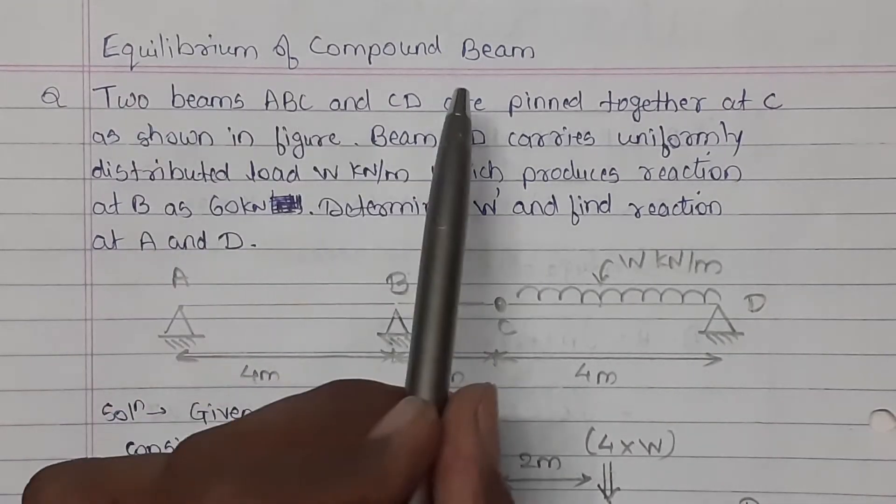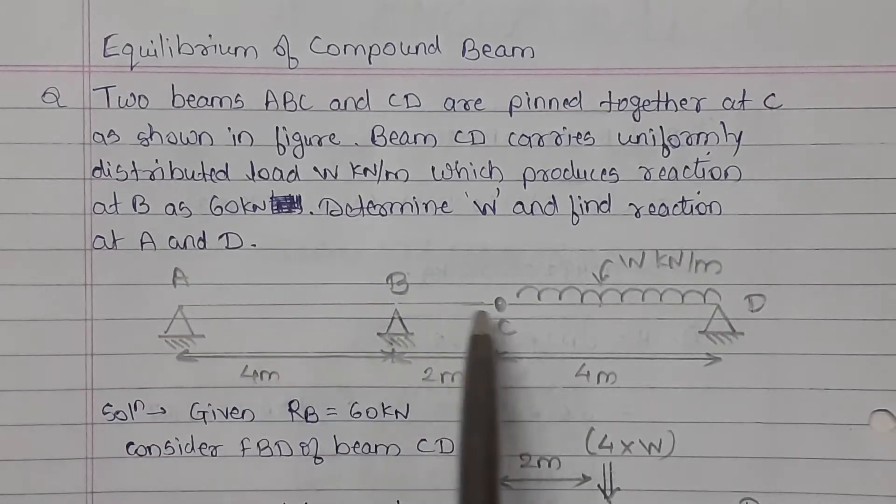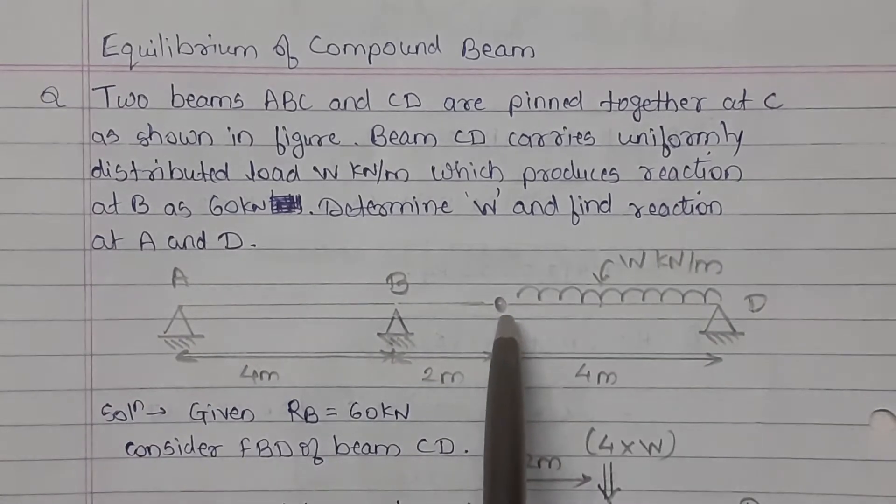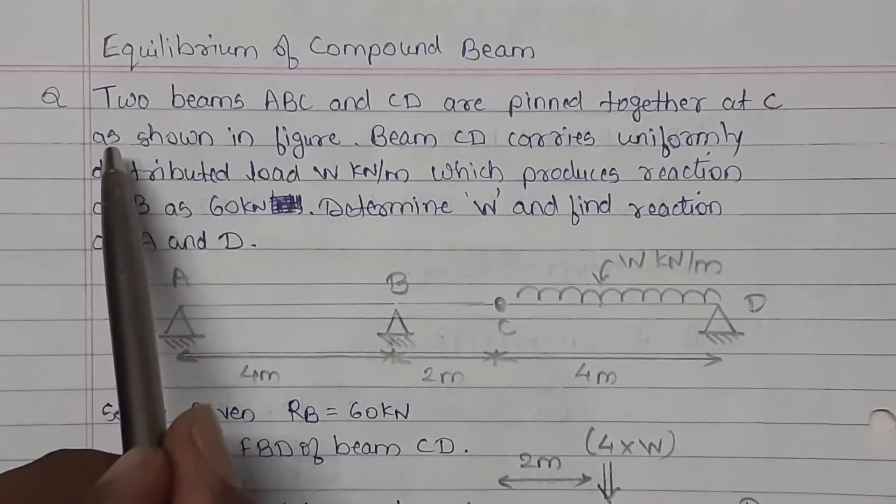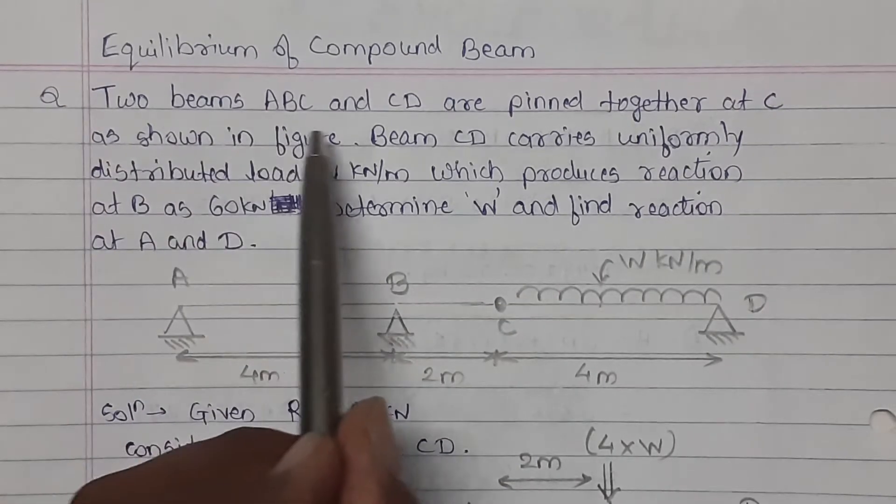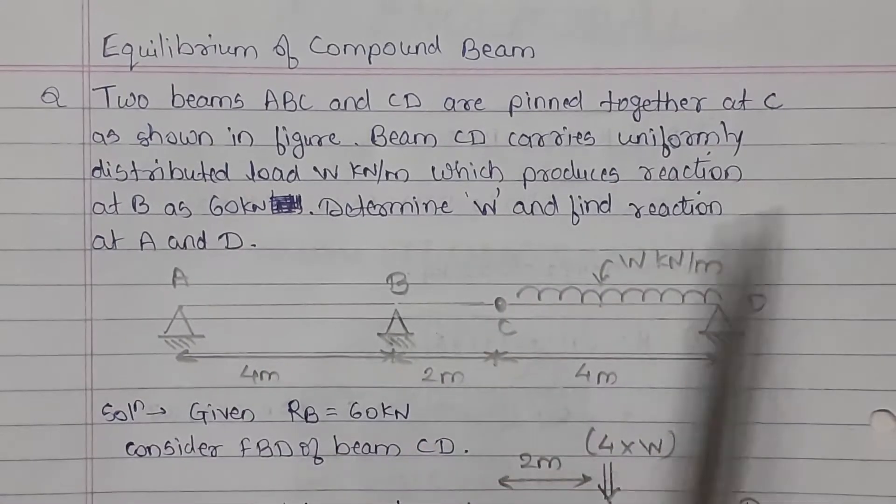Equilibrium of compound beam. Compound beam means two beams are connected by an internal pin or hinge. Numerical: two beams ABC and CD are pinned together at C.